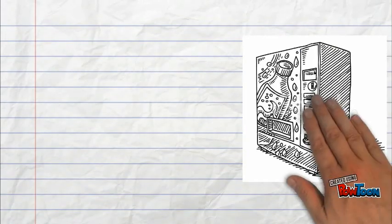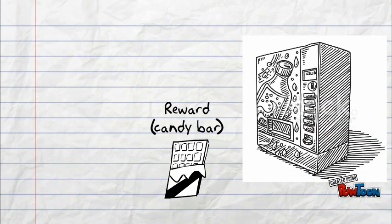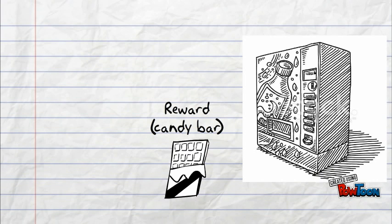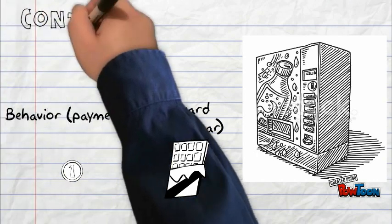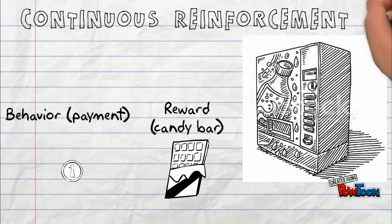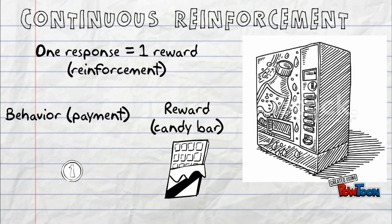Imagine a vending machine. Typically, a vending machine will give a reward every time the hungry customer elicits the desired behavior by putting money in the machine. This is called continuous reinforcement. The customer only needs to respond once in order to be rewarded, and they're going to be rewarded every single time.